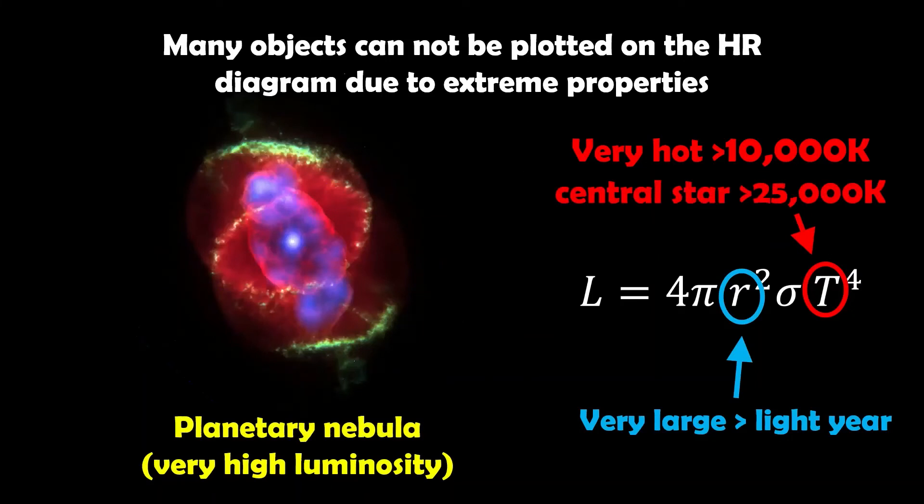Planetary nebulas are the same. This is the intermediate bit between red giants and white dwarfs when they start to lose their outer layers. Same sort of thing as supernova remnants—very large, light year in size, potentially very hot, so 10,000 Kelvin and above. But the central star, which is going to end up being the white dwarf, is very hot, about 25,000 Kelvin and above. So again, very high luminosity. They're not going to fit on the HR diagram in this case.